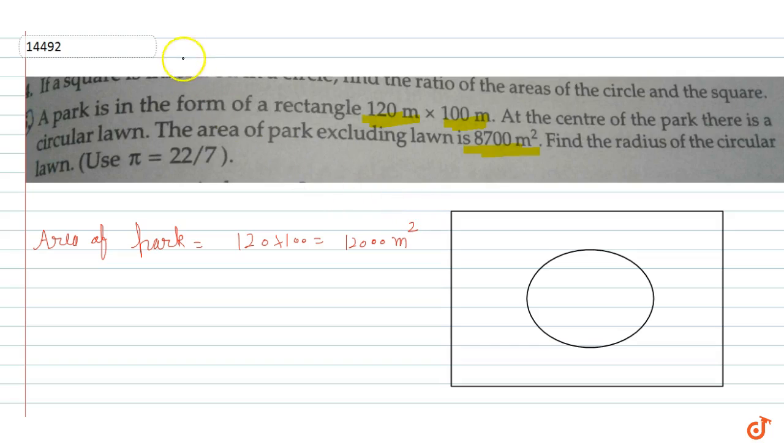Now we're given that in the center, a circular park has been drawn. There is a park. Now the remaining park, excluding this circular lawn, has an area of 8700. So if I shade this outer region with a different color...